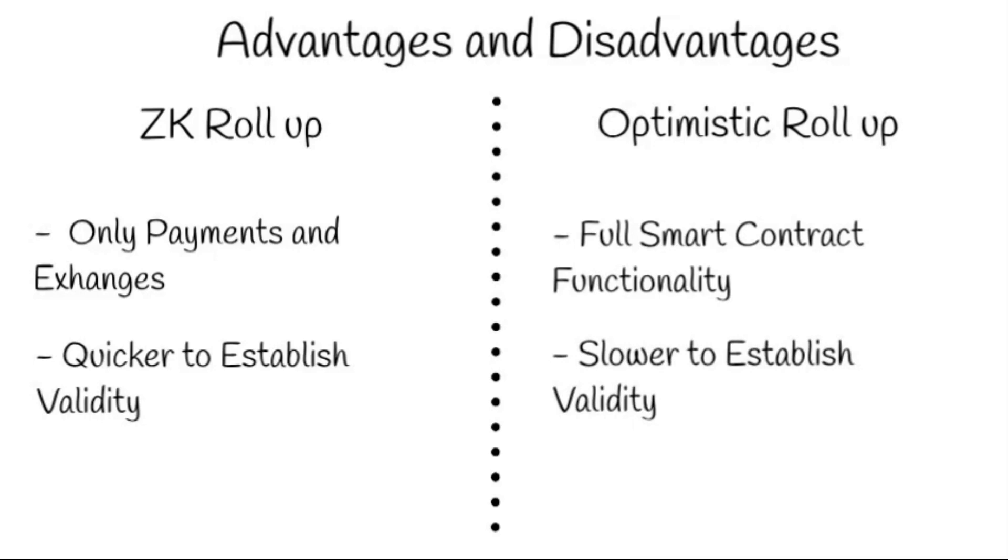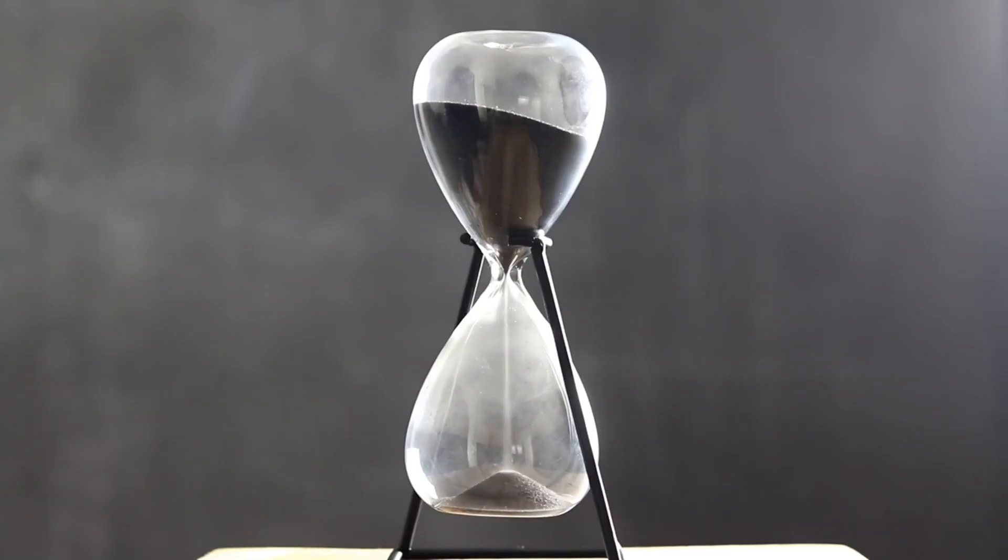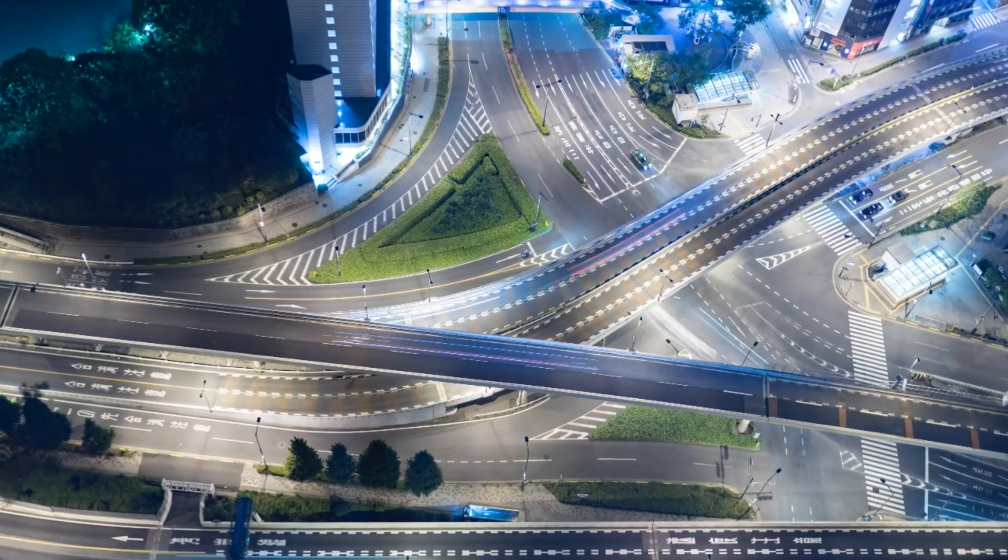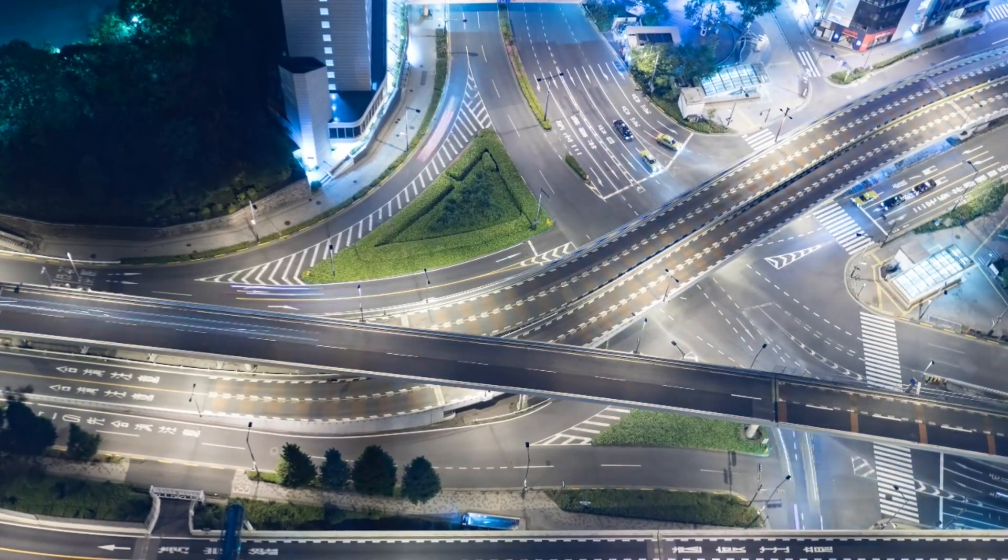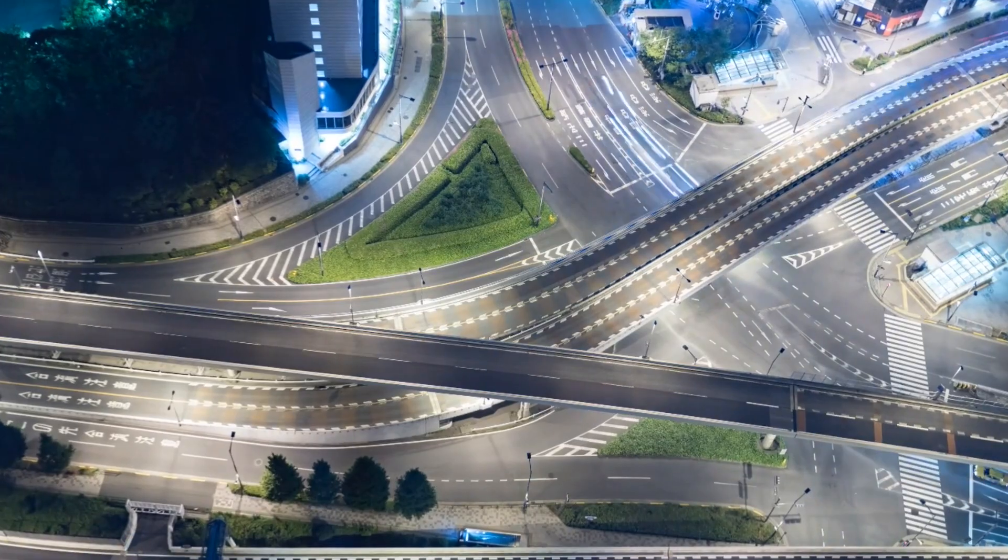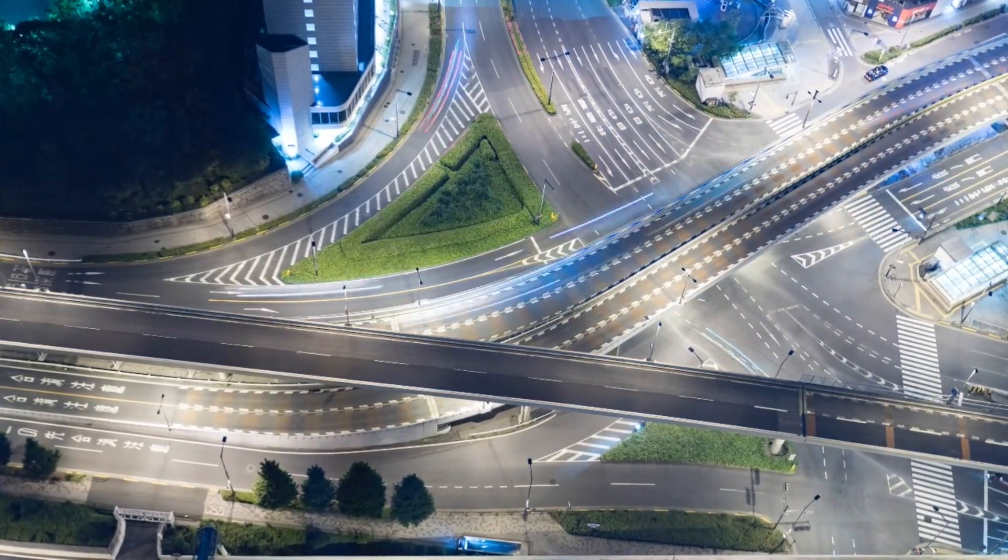So optimistic rollups have much more computational flexibility, but this flexibility comes with costs, and one of those costs is time. If you are trying to do a simple transaction like making a payment or exchanging a token on an exchange, you don't want to have to wait 4 or 5 hours for the transaction to be confirmed. ZK rollups are limited in the types of transactions they can process, but for simple transactions they are much faster to establish validity. This is what makes them ideal for exchanges and payment-related transactions.